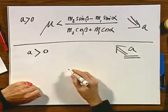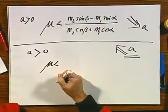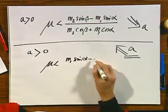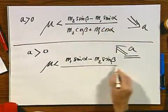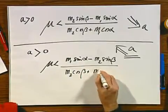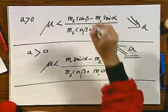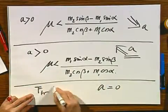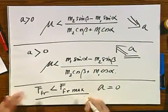Now when I do that, I find a different criterion for mu. And now I find M1 sine alpha minus M2 sine beta. It shouldn't surprise you that the upstairs changes sign. And the downstairs is exactly the same, M2 cosine beta plus M1 cosine alpha. In all other cases that this is not the case and that this is not the case, A equals zero. And the frictional force will be in general smaller than the maximum frictional force and could even be zero.